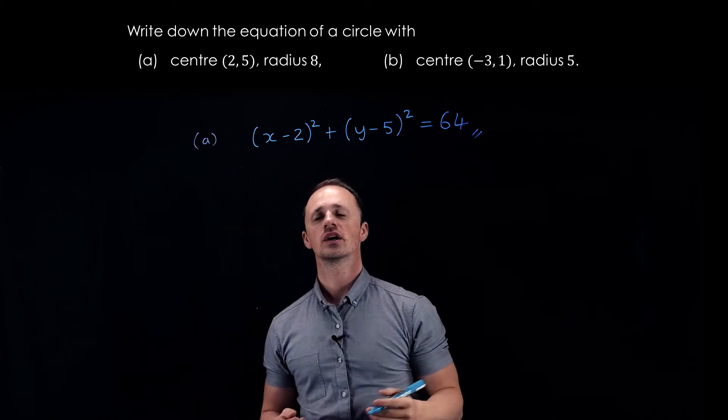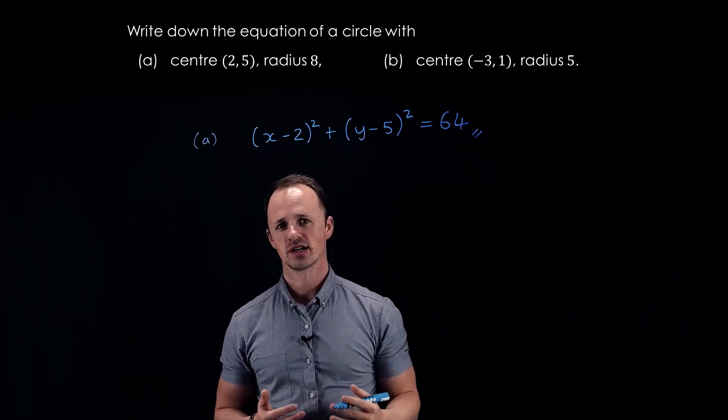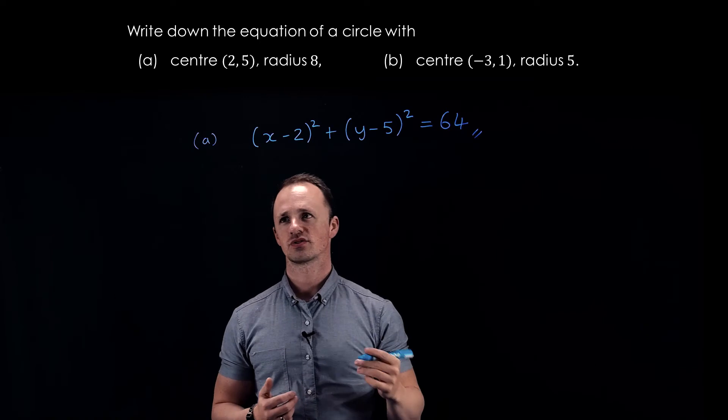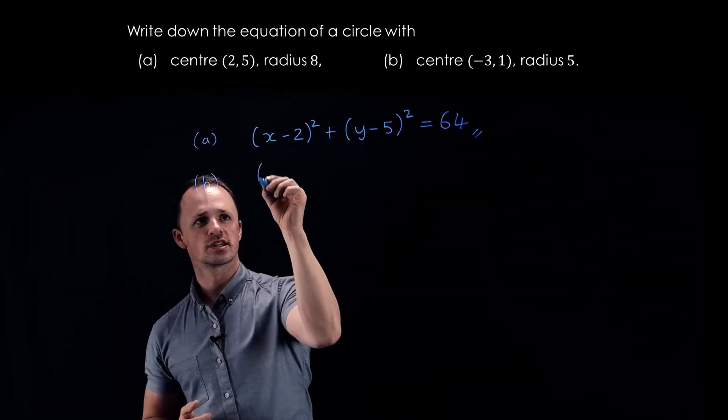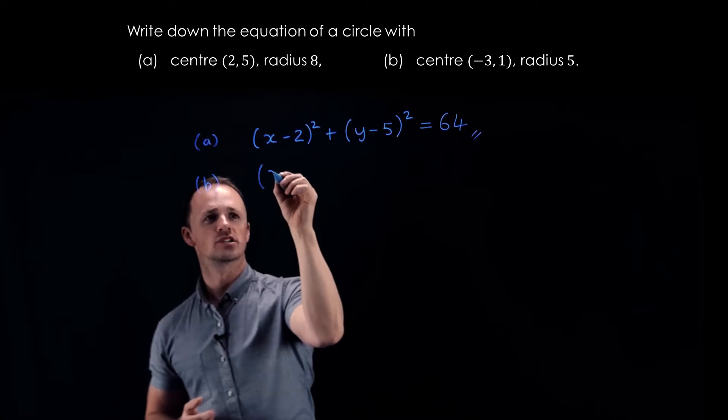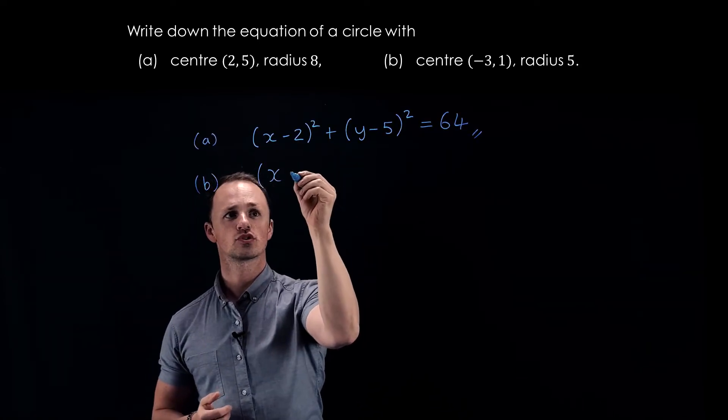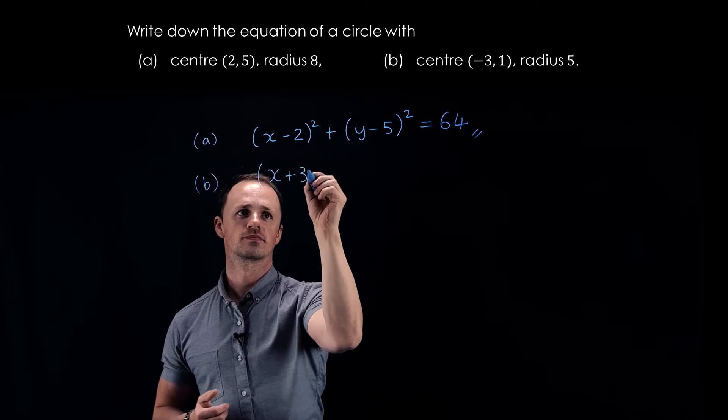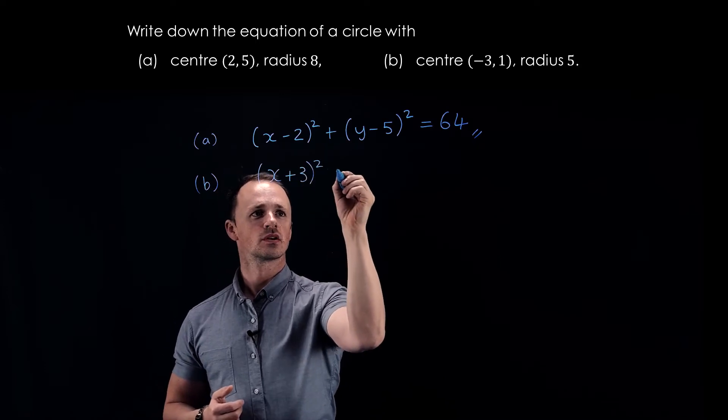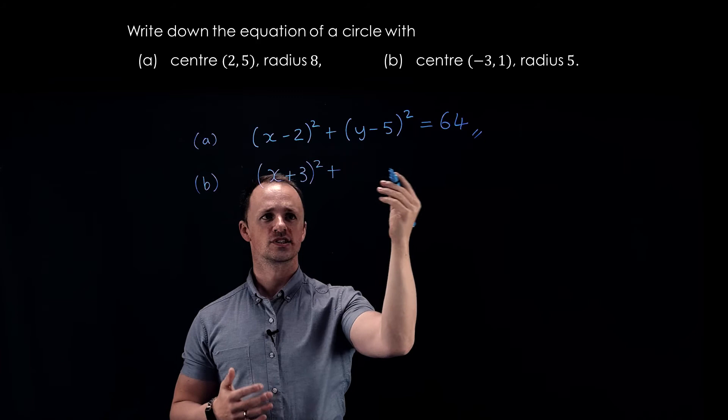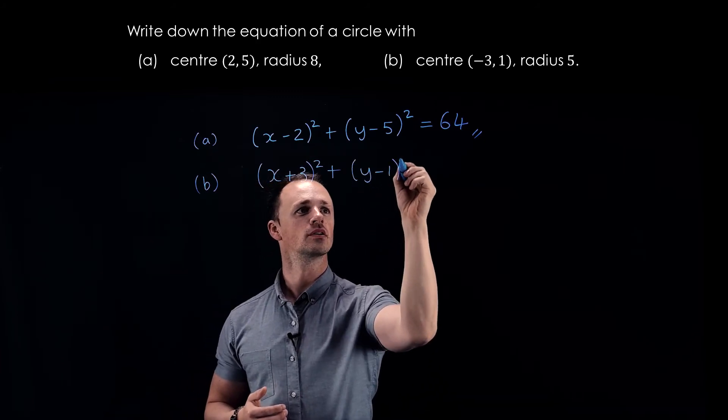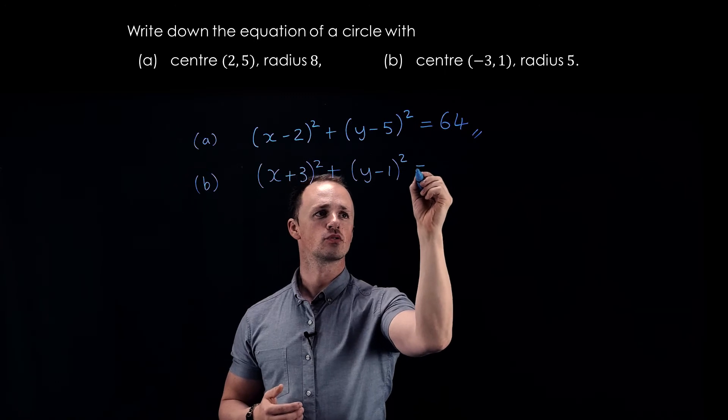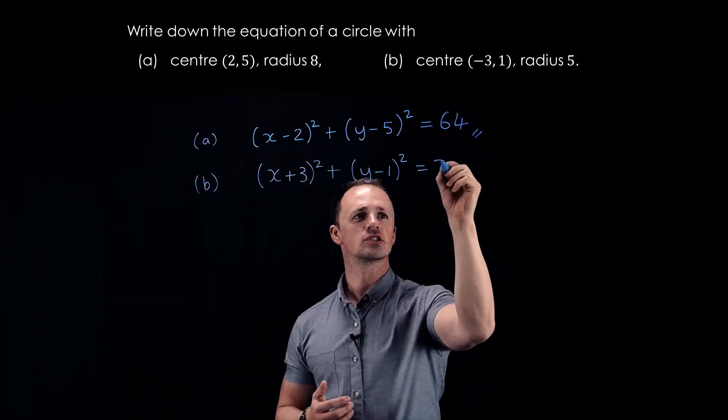In part B, we've got a circle with center (-3, 1), radius 5. The x-coordinate of the center is -3, so we do x minus -3, which we write as (x + 3)². The y-coordinate is 1, so we have (y - 1)², and that equals the radius squared, which is 25.